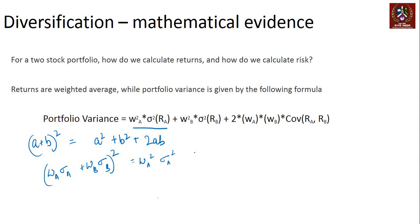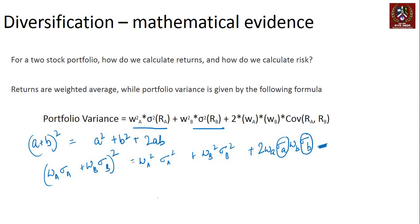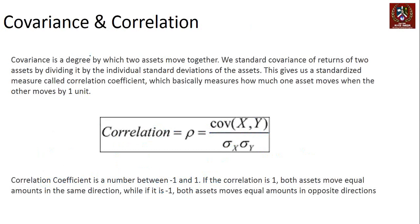Squaring the weighted average gives: weight of A squared times sigma of A squared, plus weight of B squared times sigma of B squared, plus 2 times weight of A times weight of B times sigma of A times sigma of B — and one additional term. In finance, using diversification, we include a term called covariance between the returns of stock A and stock B. This brings us to the new term: covariance. Covariance is the degree by which two assets move together — or technically, vary together.